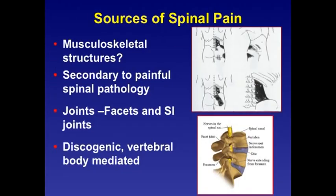Sources of spinal pain: it is quite difficult to differentiate clinically between the different origins of spinal pain. The most common structures are musculoskeletal pain generators secondary to spinal pathology — facet joints, sacroiliac joints, discs, and vertebral bodies.